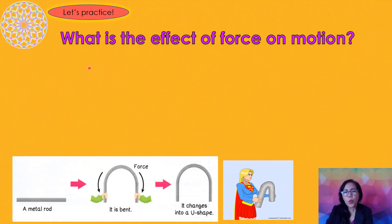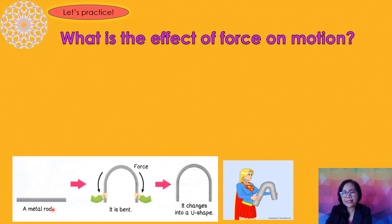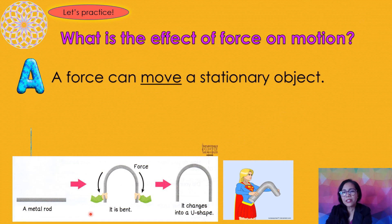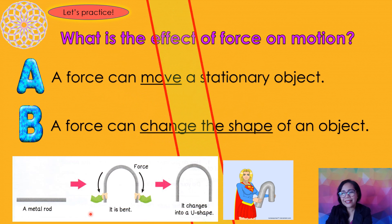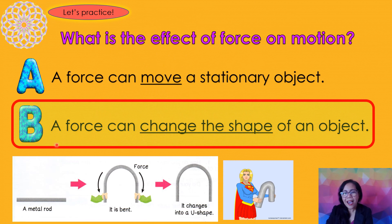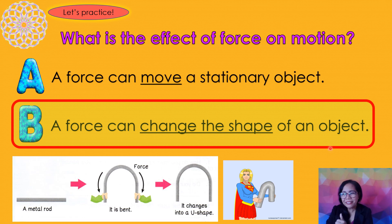Next one. What is the effect of force on motion? Look at this picture. This is a metal rod, and then you apply force on it — what will happen? Choose between letter A and letter B. The correct answer is letter B — a force can change the shape of an object. Wonderful!